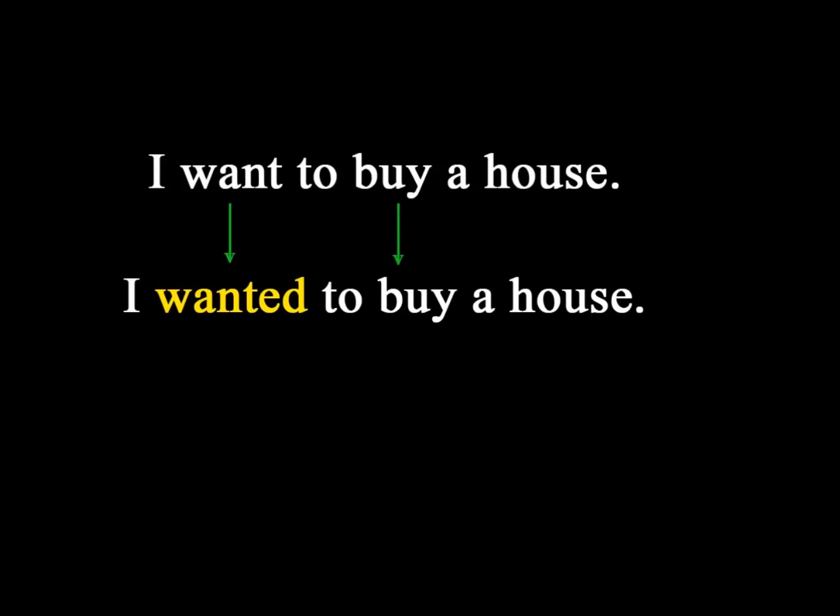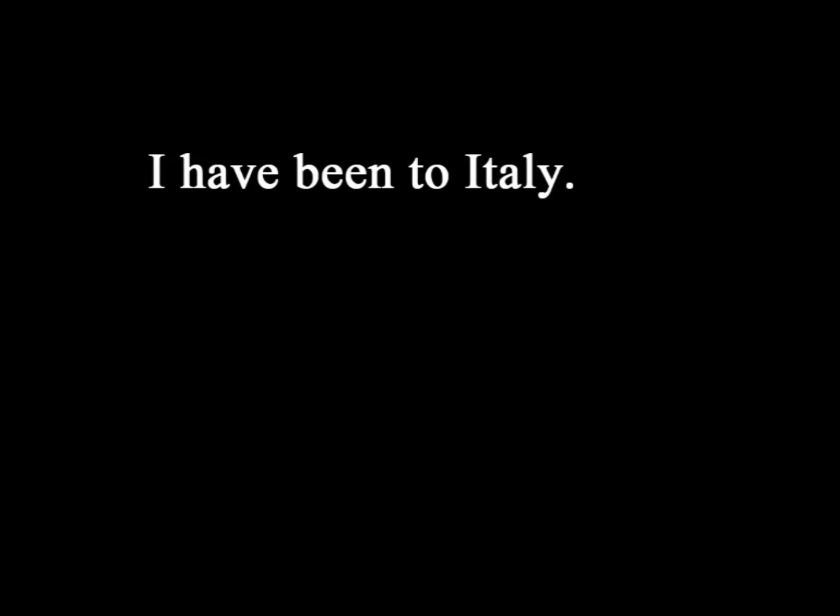So if I have a phrase, 'I want to buy a house,' and I want to turn this phrase into the past form, it will be 'I wanted to buy a house' — no change to 'buy.' If I have a phrase, 'I have been to Italy,' and I want to make it negative, it will be 'I haven't been to Italy' — no change to 'been.'